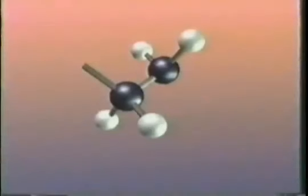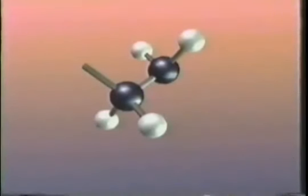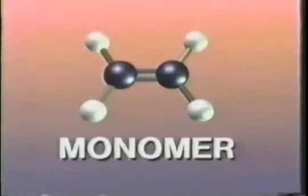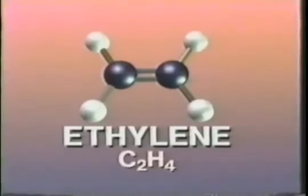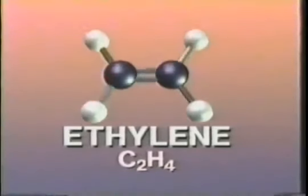These repeating units are formed from small molecules called monomers. In this program, we examine one of the simplest monomers, ethylene, and the process of converting it into polyethylene.